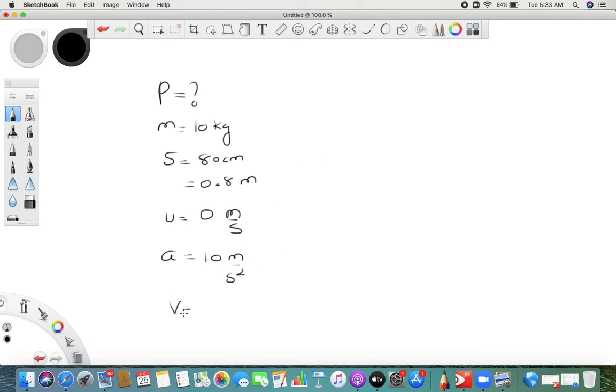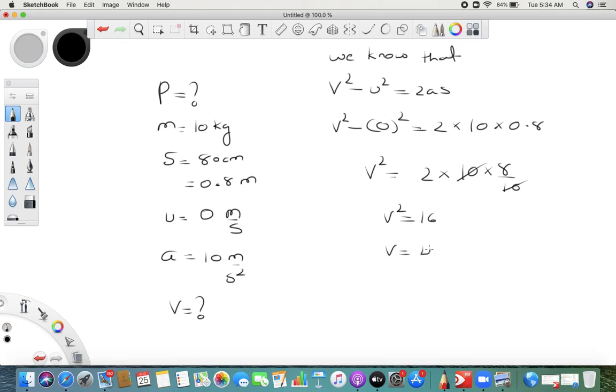We first find out final velocity, then only we can find out momentum. In order to find this, we use the formula v square minus u square is equal to 2as. So v square is 0 square, 2a is 10, and s is 0.8. V square is equal to 2 into 10 into 8 upon 10. This 10 and 10 get cancelled, v square is equal to 16, v is equal to 4 meter per second.